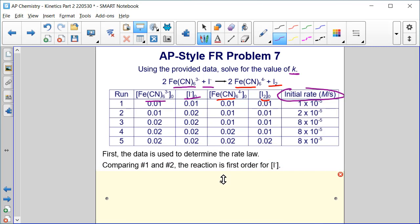Comparing runs one and two, everything is constant except the concentration of I minus. It doubles, and when it doubles, the rate also doubles. So the reaction is first order for I minus.